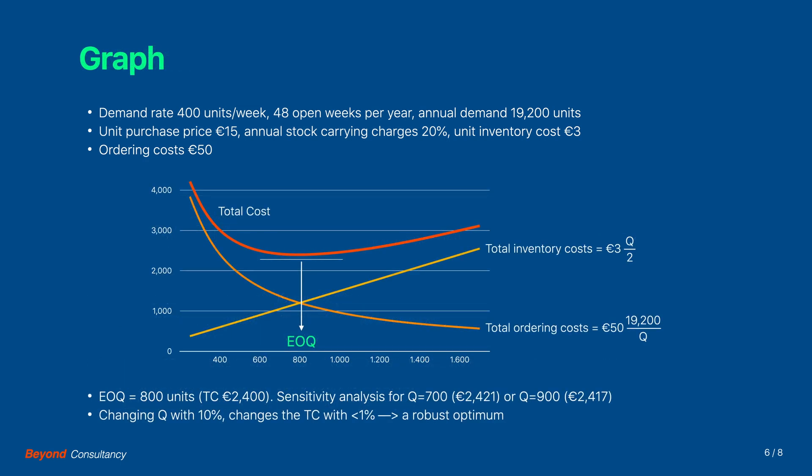The graph shows that indeed the total cost is not a symmetrical function. An important lesson which we can learn from this sensitivity analysis is that a variation of about 10 percent in the lot size results in a cost increase of less than 1 percent. This means in this case that the optimum point is very robust. This has practical implications.